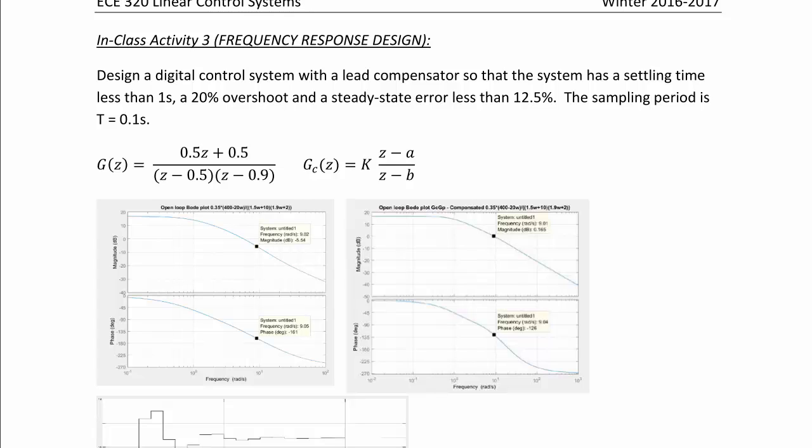We're going to do this one by using a lead compensator to increase the phase margin, where the digital plant is G(z) equals 0.5z plus 0.5 over z minus 0.5 times z minus 0.9. The form of the lead compensator is k times z minus a over z minus b.